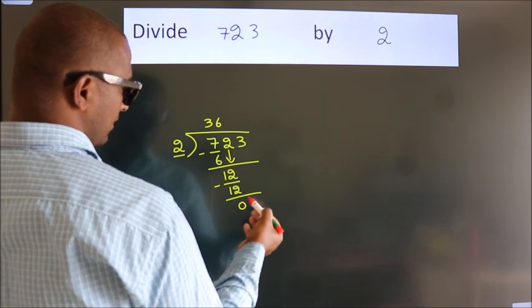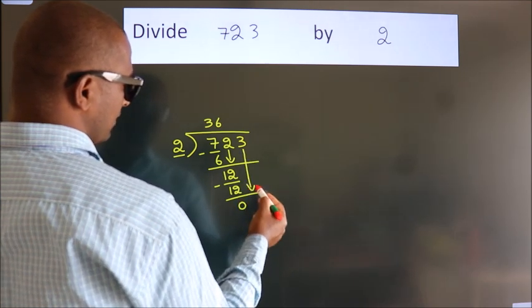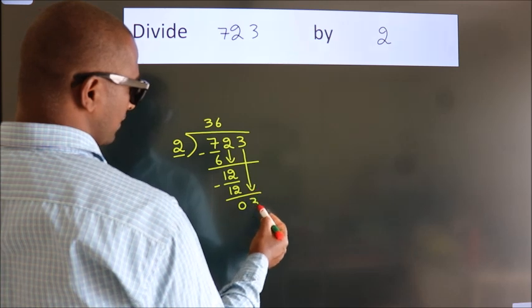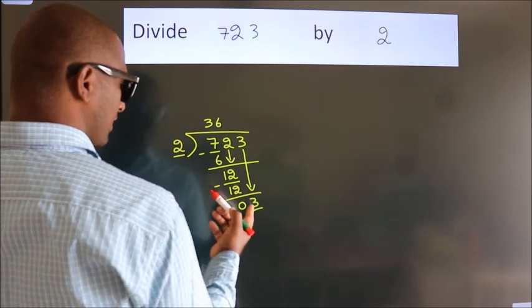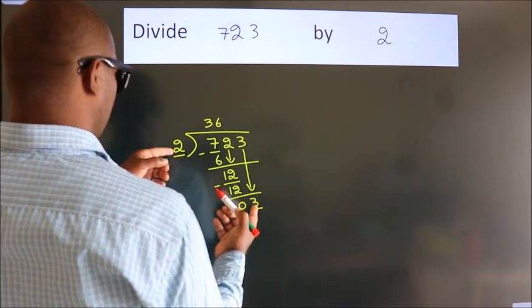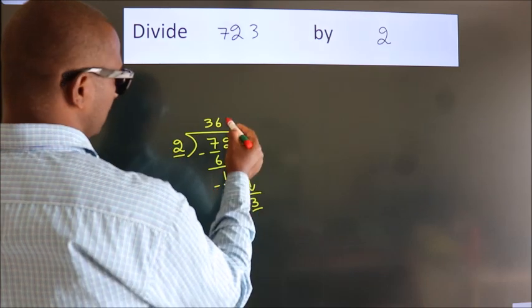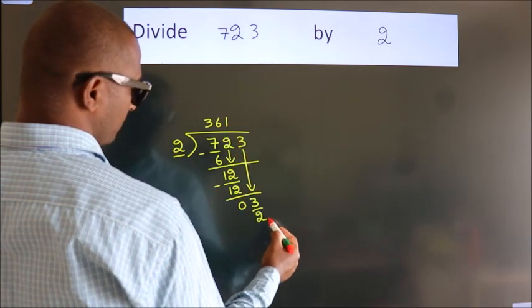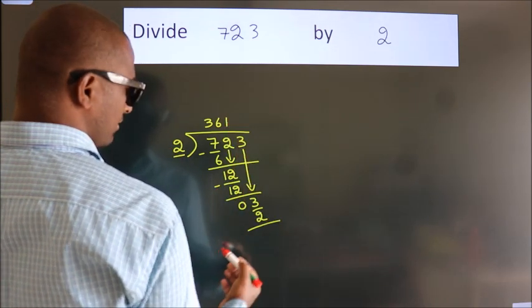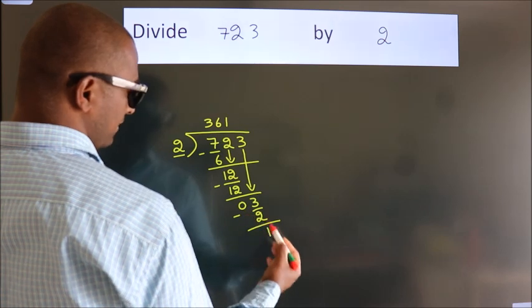After this, bring down the beside number. 3 down makes 3. A number close to 3 in the 2 table is 2 ones, 2. Now we subtract and get 1.